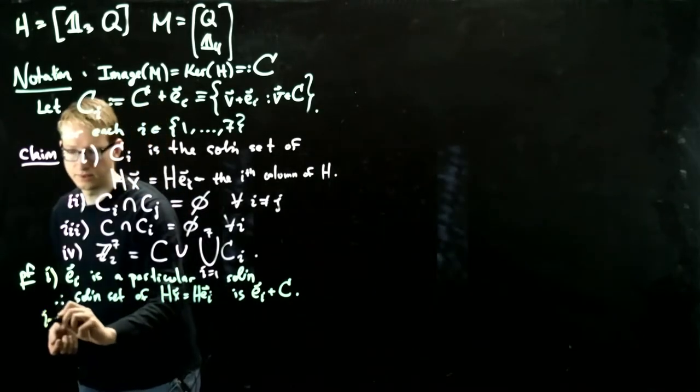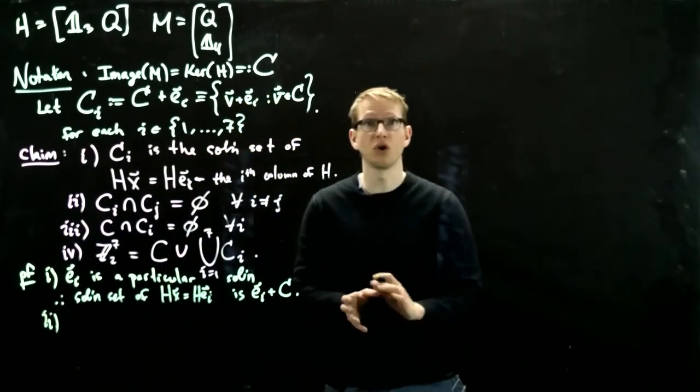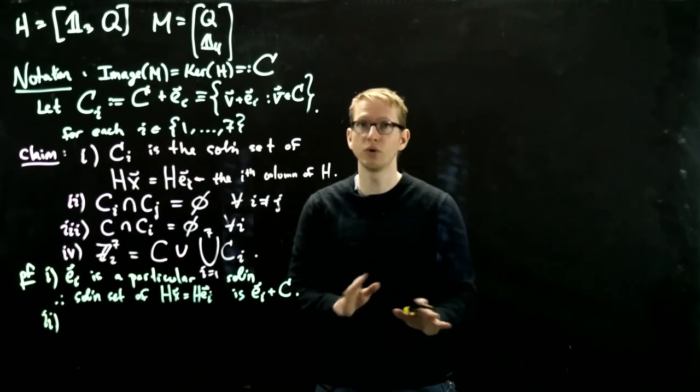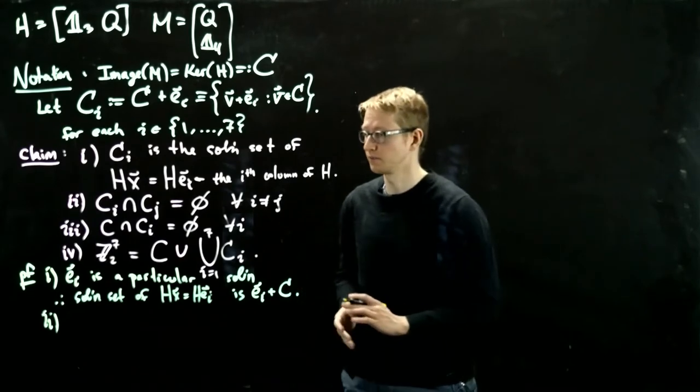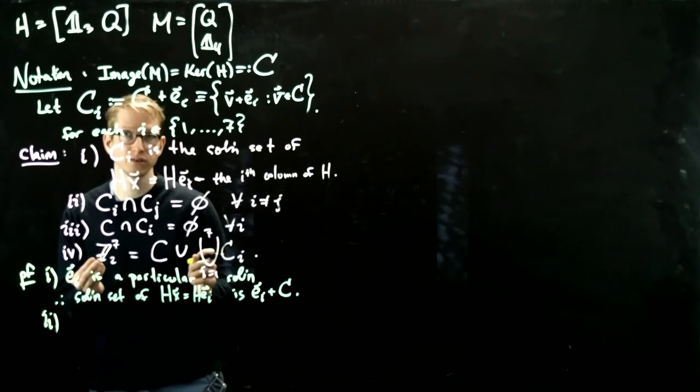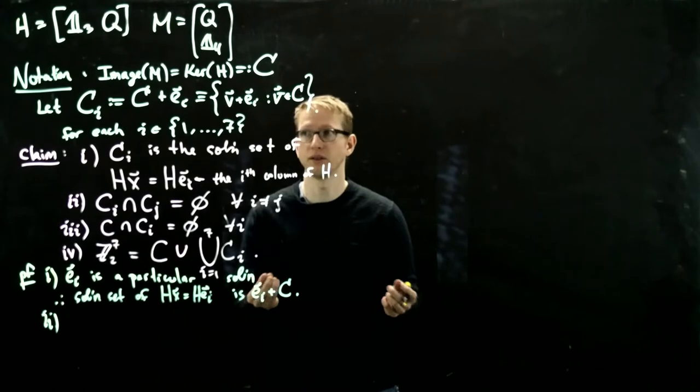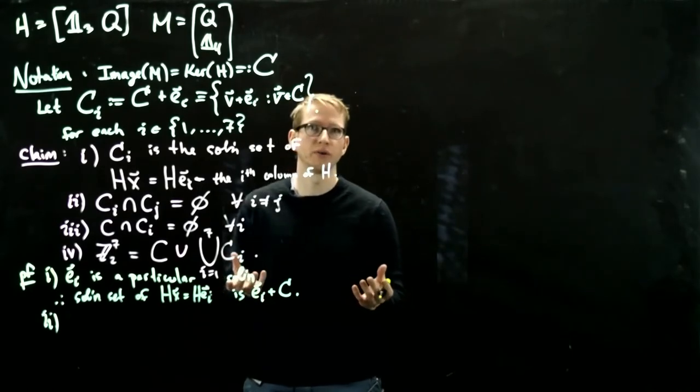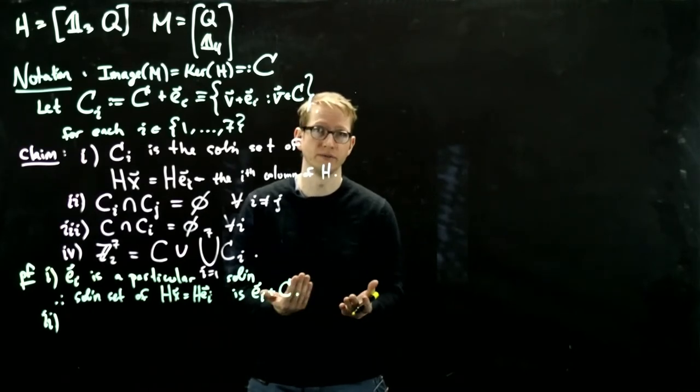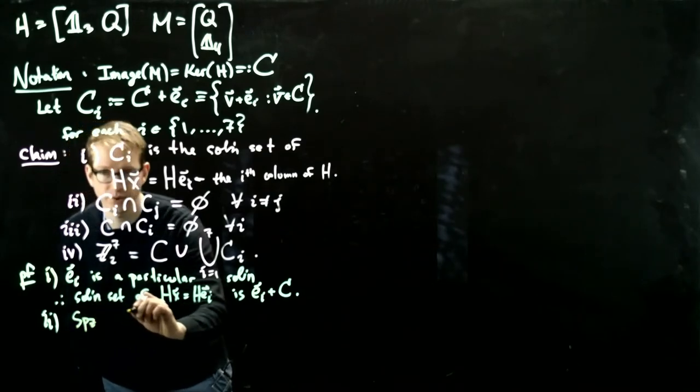Now let's look at the second claim. The second claim says that these are all different. All of these subsets for different i and j have no common intersection. So in order to prove that, let's pick two vectors, one in C_i, one in C_j, and they're going to be arbitrary. And then we're going to show that the only way that they can be equal to each other is if those subscripts are equal, if i and j are equal. So let's start, suppose that we have two vectors.